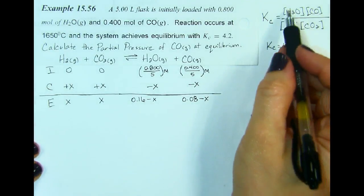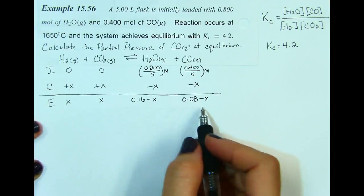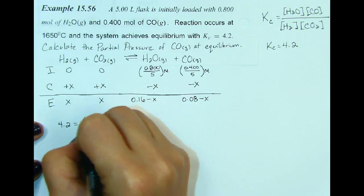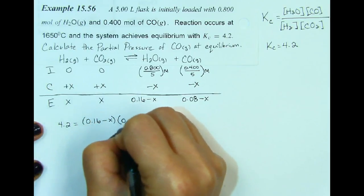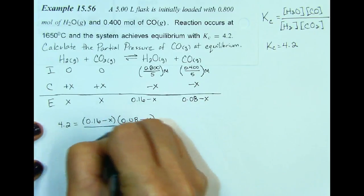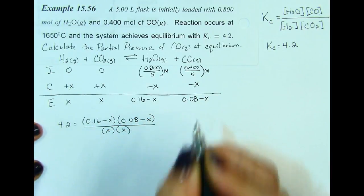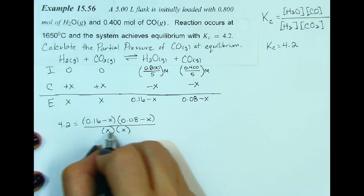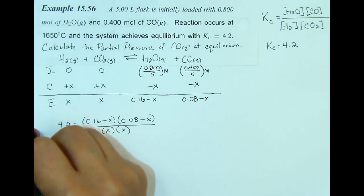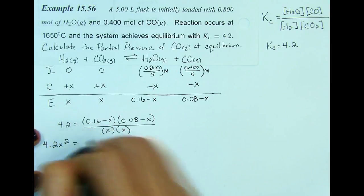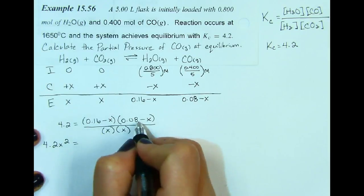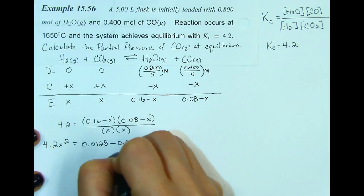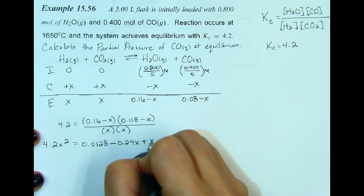Now I'm going to set up my law of mass action to solve for x. We have 4.2 equals 0.16 minus x times 0.08 minus x, all over x times x. I'm going to simplify this — multiply both sides by x squared to get 4.2x squared equals, then FOIL the numerator to get 0.0128 minus 0.24x plus x squared.